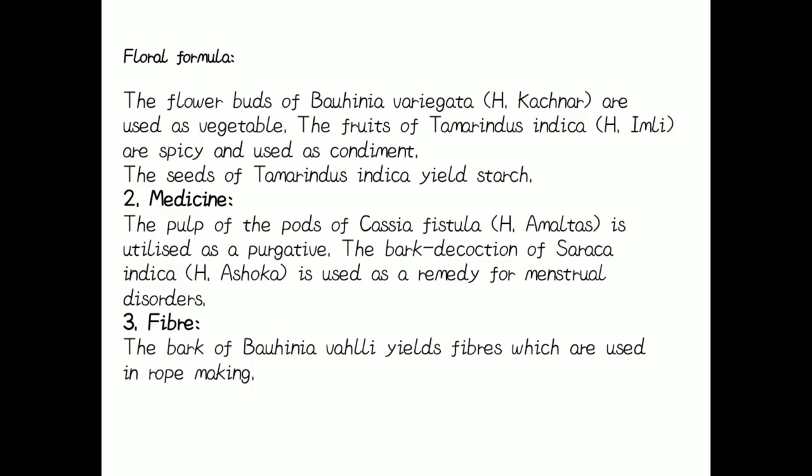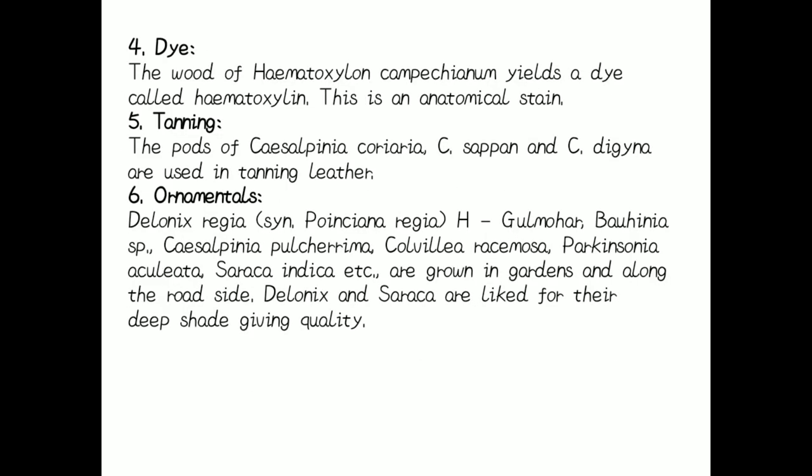Economic importance: The flower buds of Bauhinia variegata (kachnar) are used as a vegetable. The fruit of Tamarindus indica is spicy and used as a condiment. The seeds of Tamarindus indica yield starch and are also used for medicinal purposes. The pulp of the pods of Cassia fistula (Amaltas) is used as a purgative. The bark decoction of Saraca indica is used as a remedy for menstrual disorders. The bark of Bauhinia yields fiber used in rope making.